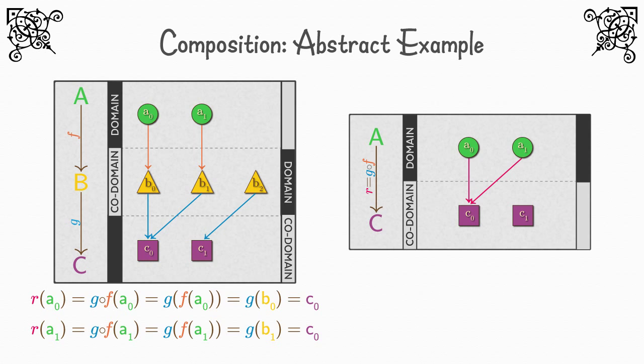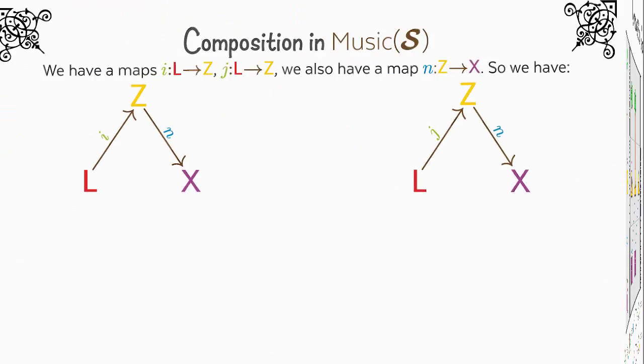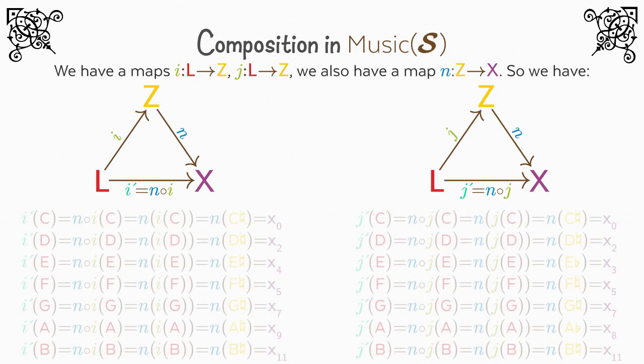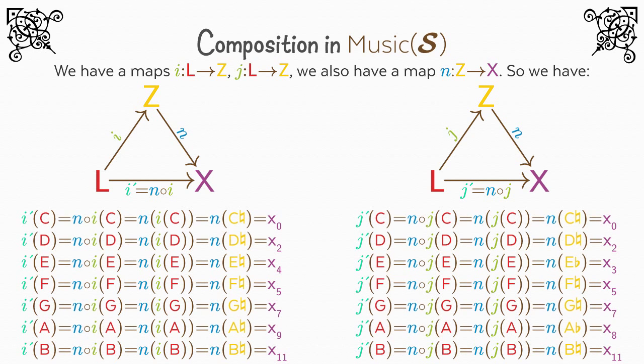Now let's turn to Music S and explore some composites of our functions. There are three composites I would like to describe in Music S — I'll describe two now. We have map I from L to Z and map J from L to Z representing the major and minor scales respectively. We also have map N from Z to X. Looking at Description of Music S 1-3, we can form the composites N following I and N following J — let's call them I′ and J′. As you can see, there is nothing special about composing functions in S: as long as you have a chain of compatible maps, you can compose them to form a new map from the domain of the first to the codomain of the last.